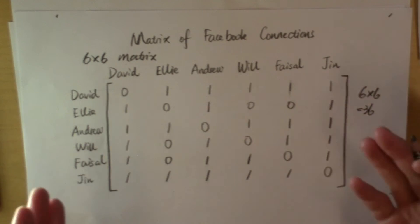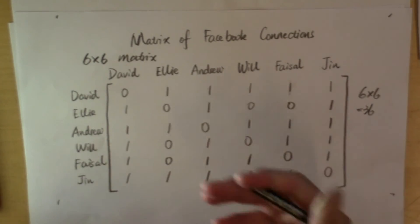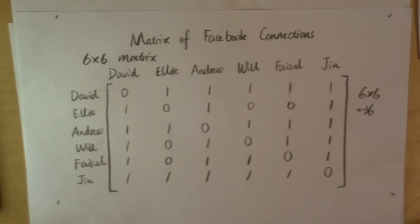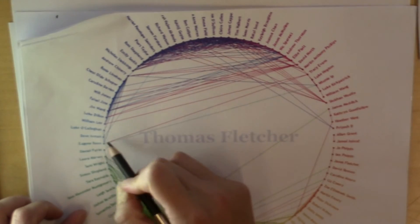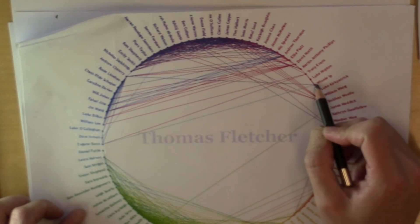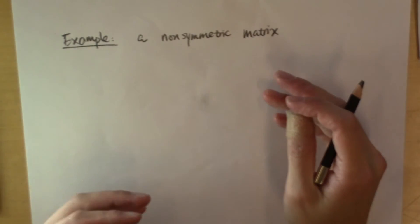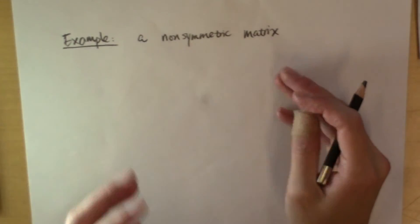For example, this matrix that represents Facebook connections that we talked about before is symmetric. Because when you're Facebook friends with someone, that person has to be Facebook friends with you. So there's this symmetry in this relationship. Can you think of a social network that lacks this symmetry?